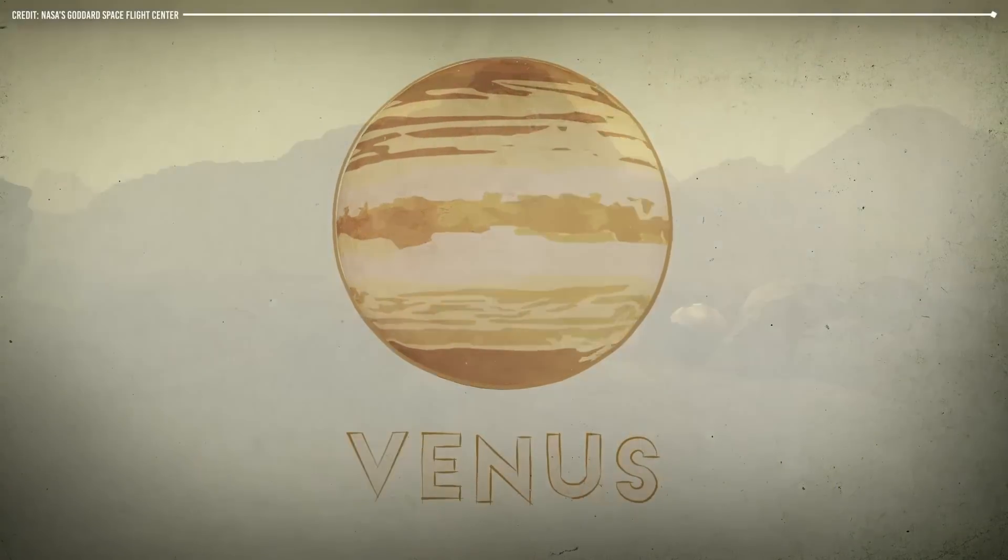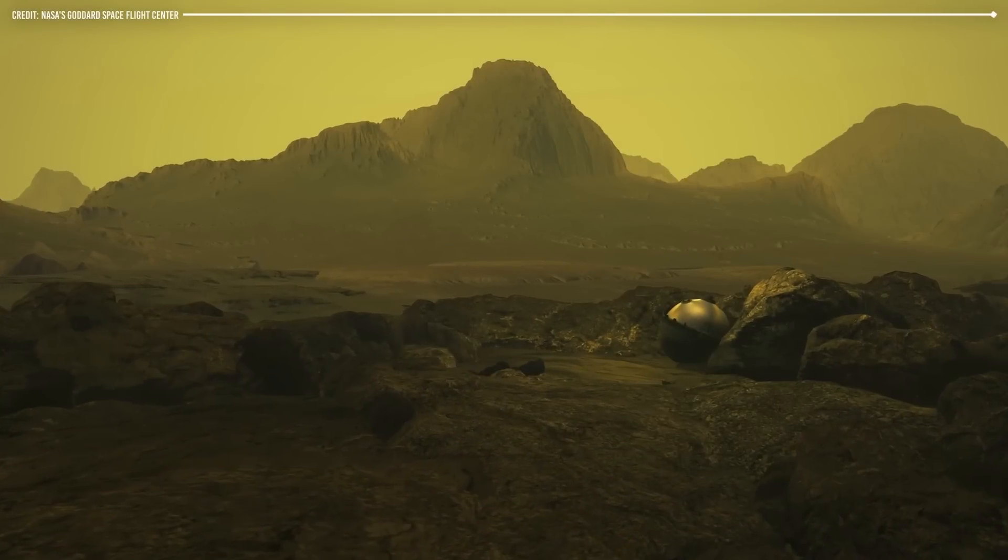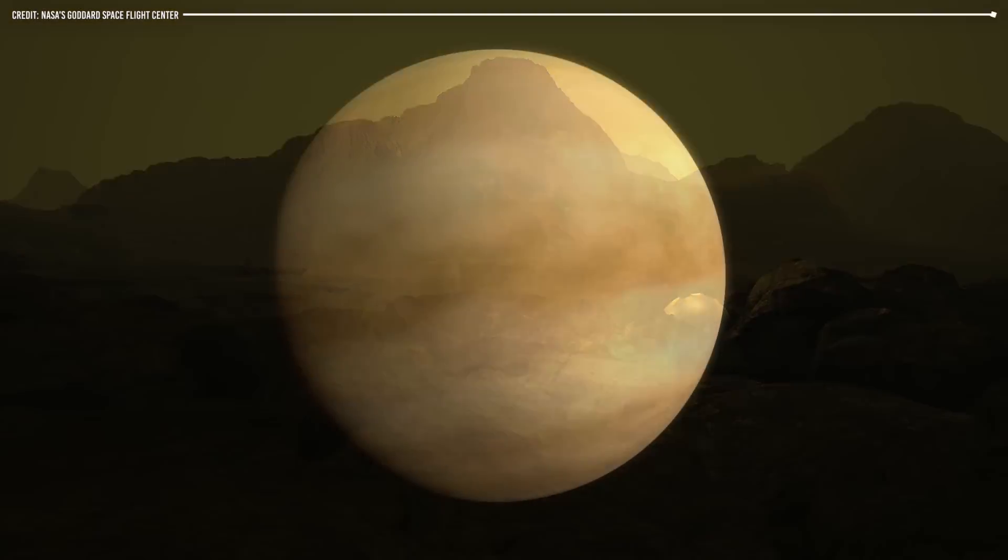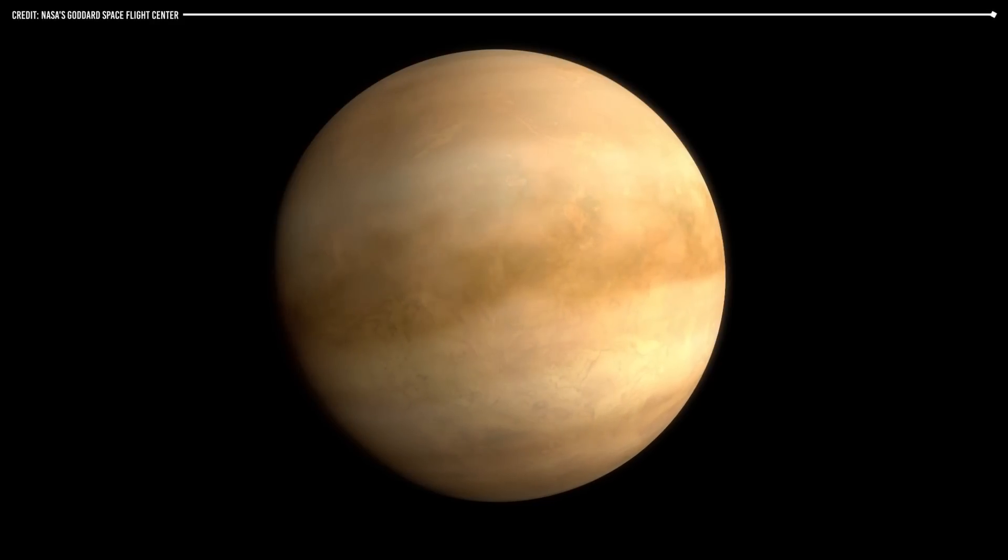While Earth is a habitable planet, Venus is a lifeless, hellish environment with temperatures hot enough to melt lead and an atmosphere that is toxic and dense.